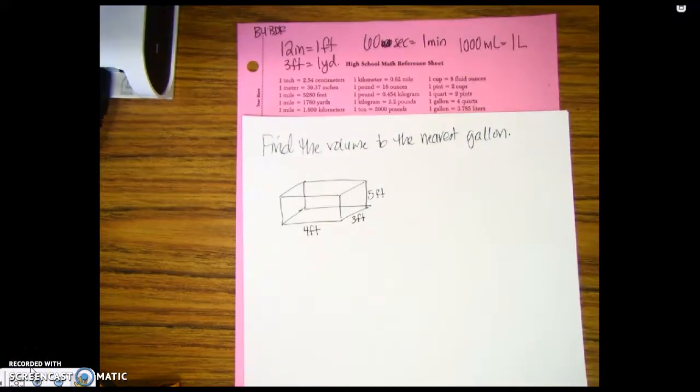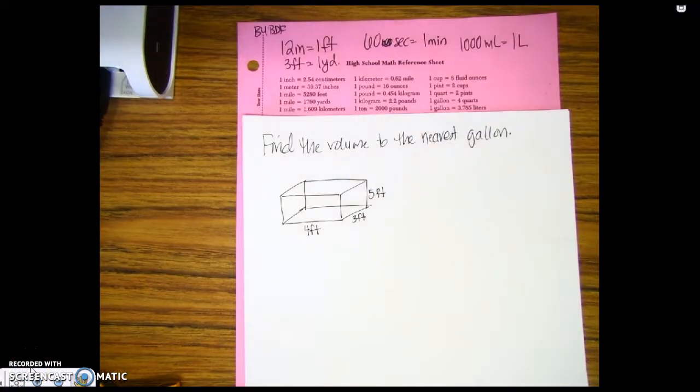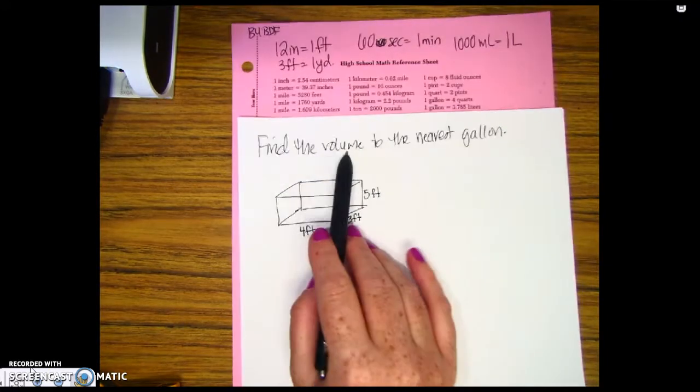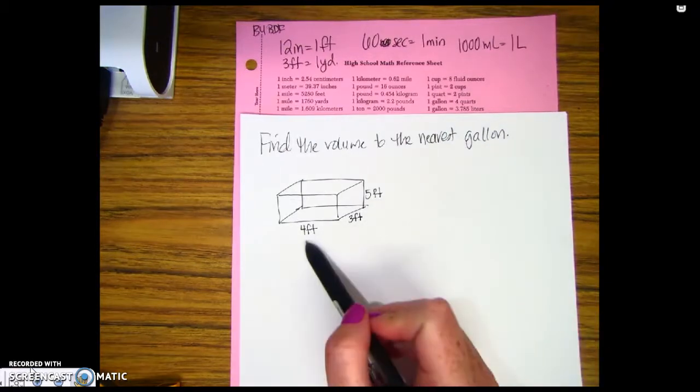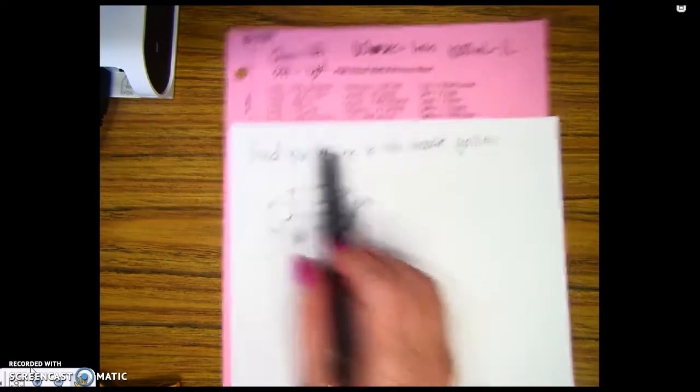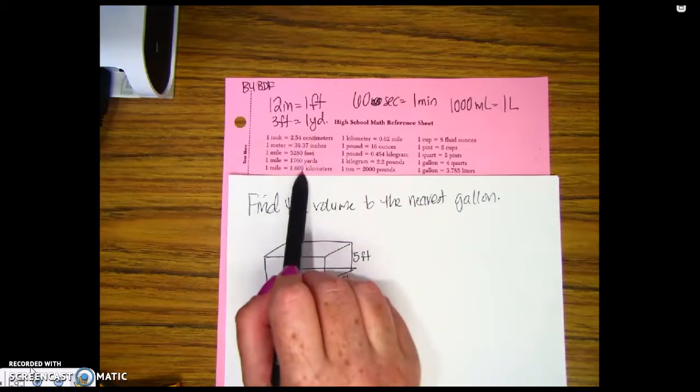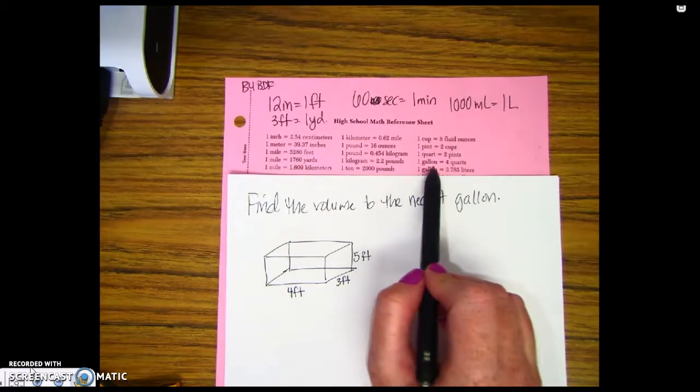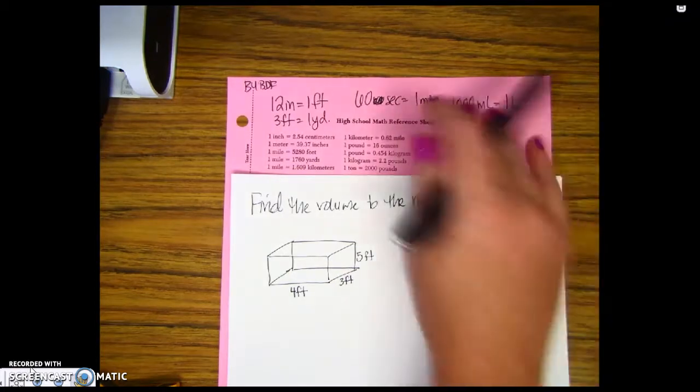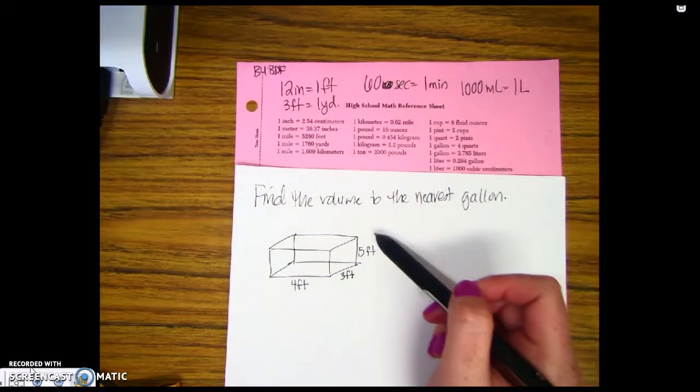All right guys, quick video here on how to do some more unit conversions. So this is find the volume to the nearest gallon. I look at my units and my units are in feet. And if I look at my reference sheet, there's no real conversion from feet to gallons so I'm not gonna let that freak me out right now.